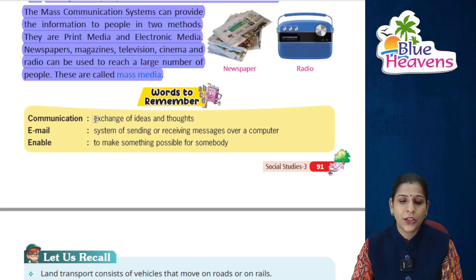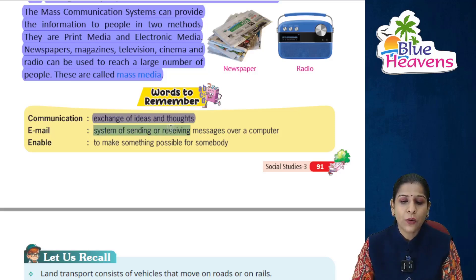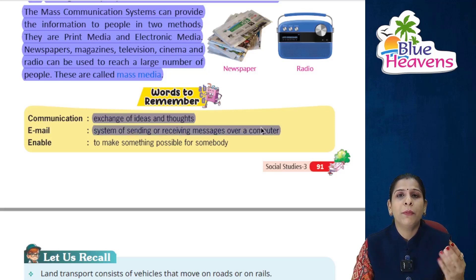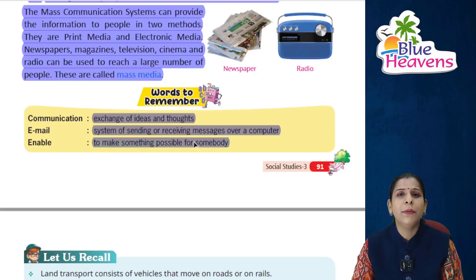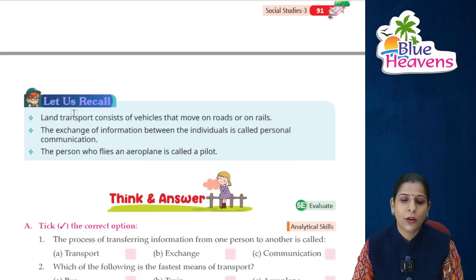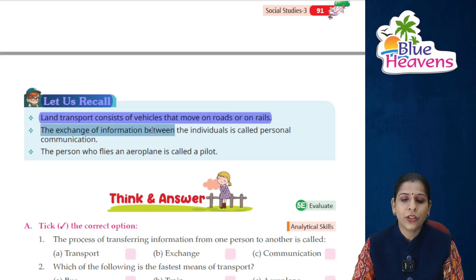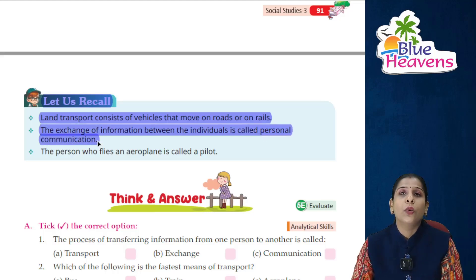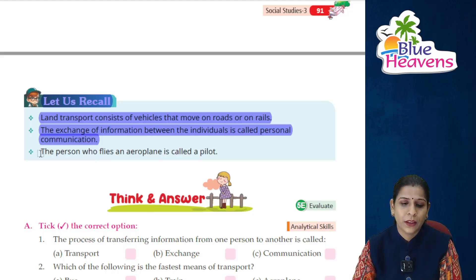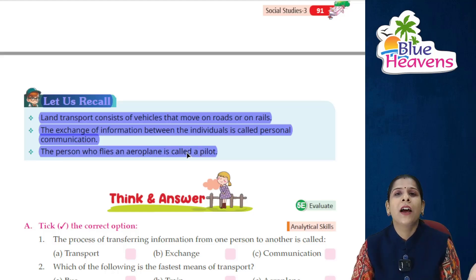Words to remember: Communication means the exchange of ideas and thoughts. Email is a system of sending or receiving messages over a computer. Enable means to make something possible for somebody. Land transport consists of vehicles that move on roads or on rails. The exchange of information between individuals is called personal communication. The person who flies an aeroplane is called a pilot.